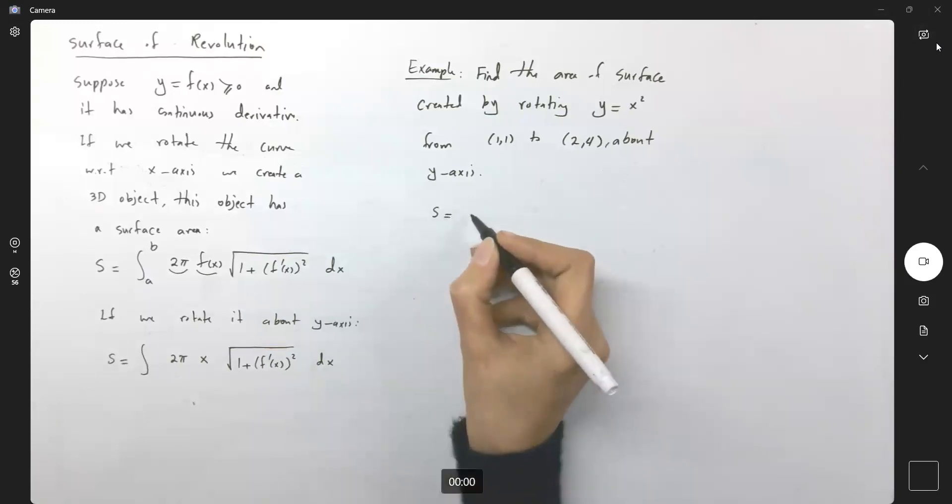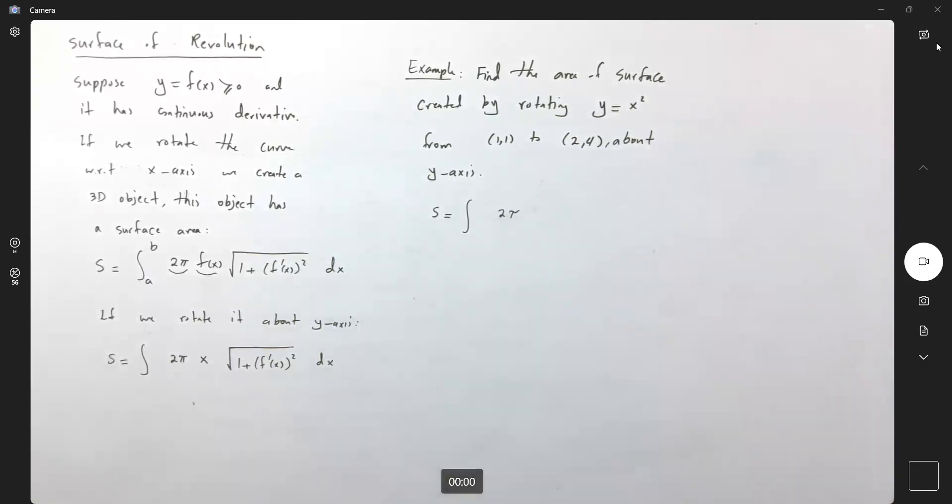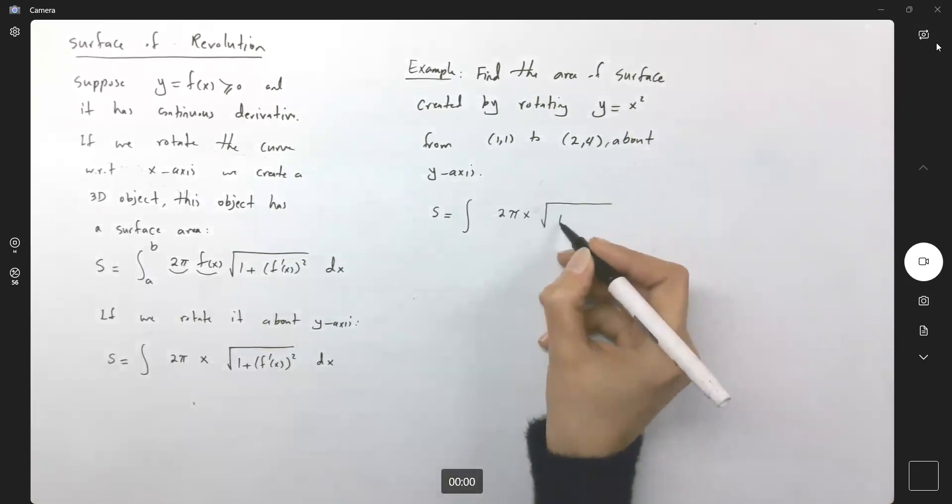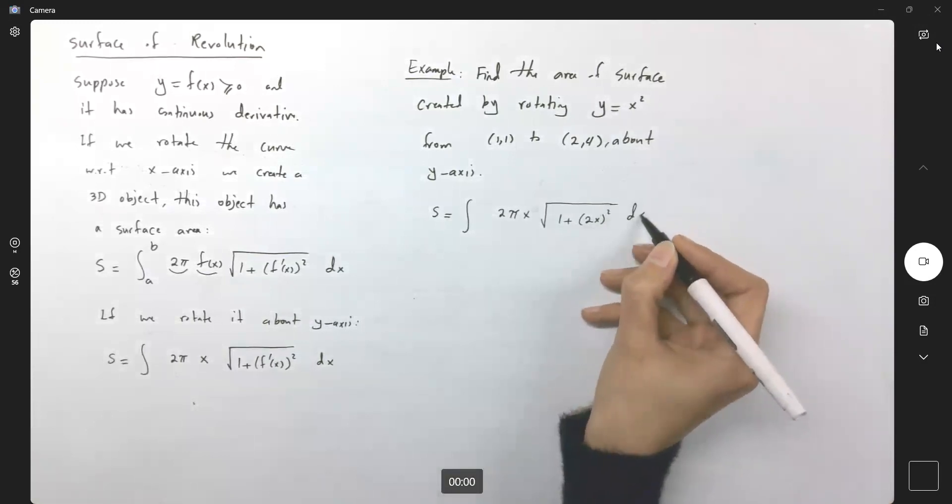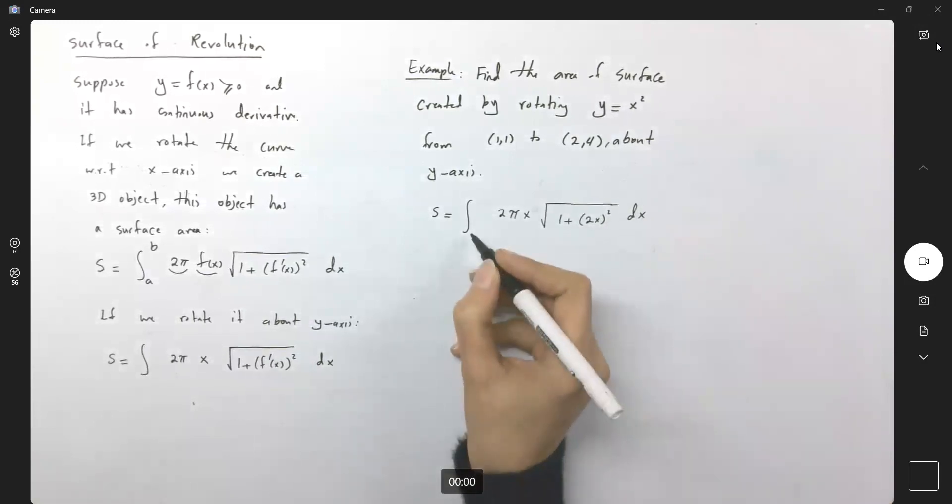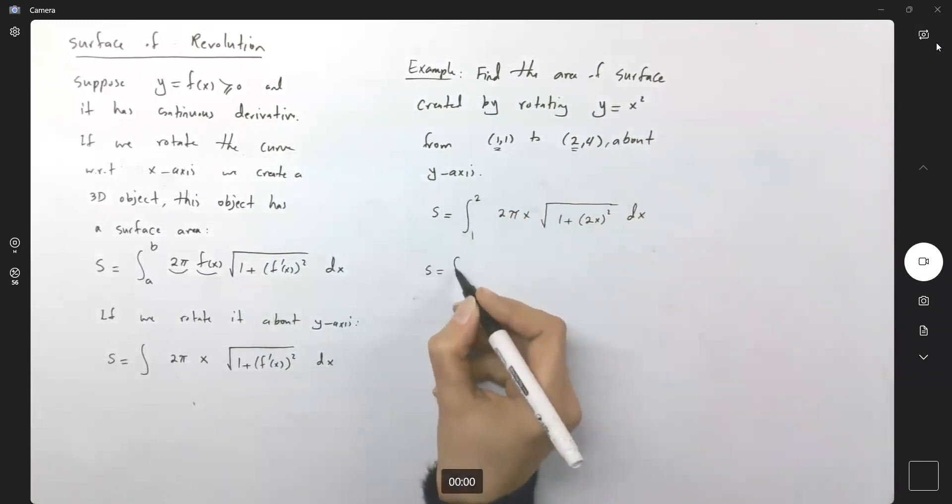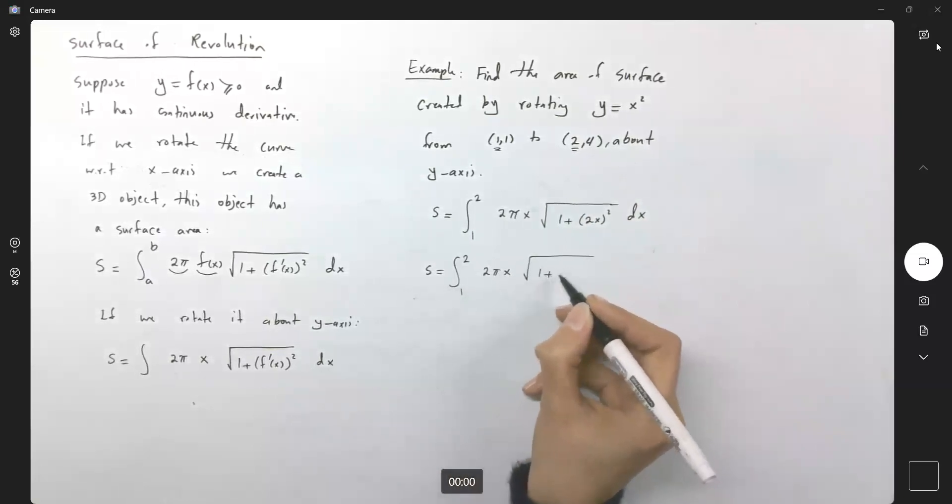So our s is equal to the integral of 2 pi times x square root of 1 plus the derivative, which is 2x to the second power dx. Our x ranges between 1 and stops at 2. So s equals the integral from 1 to 2 of 2 pi x square root of 1 plus 4x squared dx.